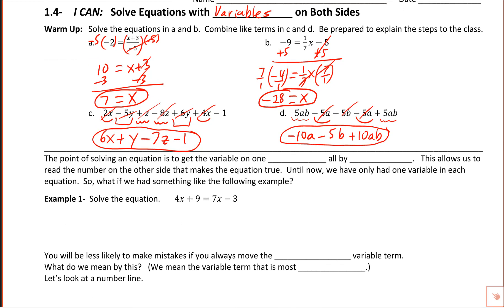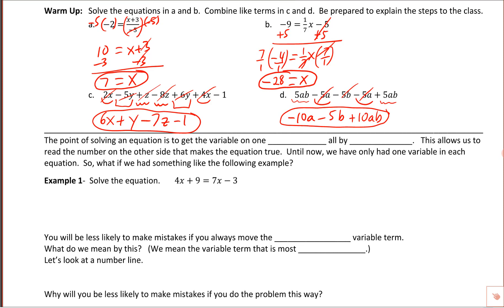Let's take a look at equations with variables on both sides. Remember, when solving an equation, the whole point is to get the variable on one side all by itself — to isolate it — so we can read off the answer that makes the equation true. So far, every equation has had a variable on just one side. Let's look at what we do when we have variables on both sides.